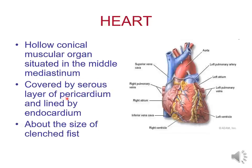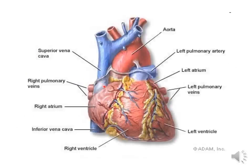The heart is covered by the pericardium, more specifically the serous layer of the pericardium. And the inside of this hollow organ is lined by endocardium. The size of the heart is similar to that of a clenched fist. The heart has four main chambers: the right atrium, the left atrium, the right ventricle, and the left ventricle. The great vessels arise from the ventricles.